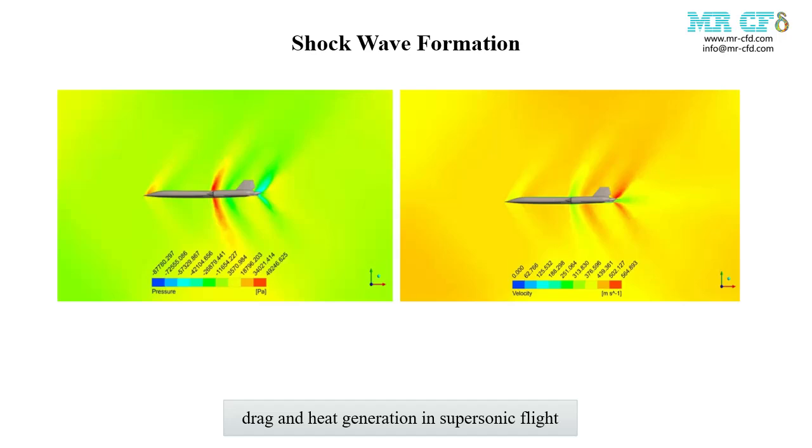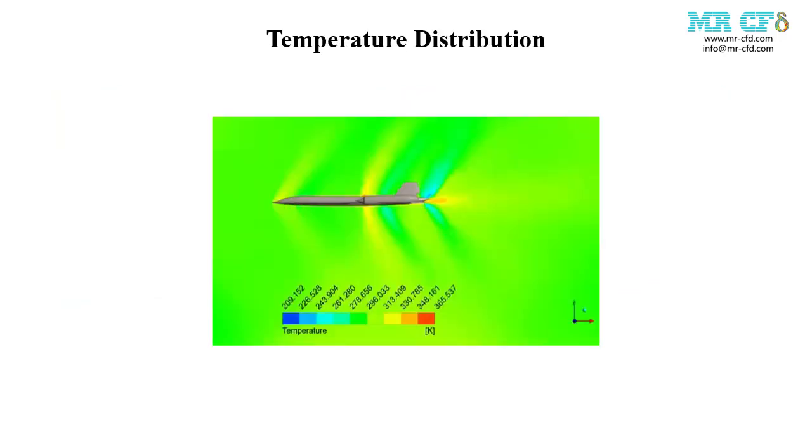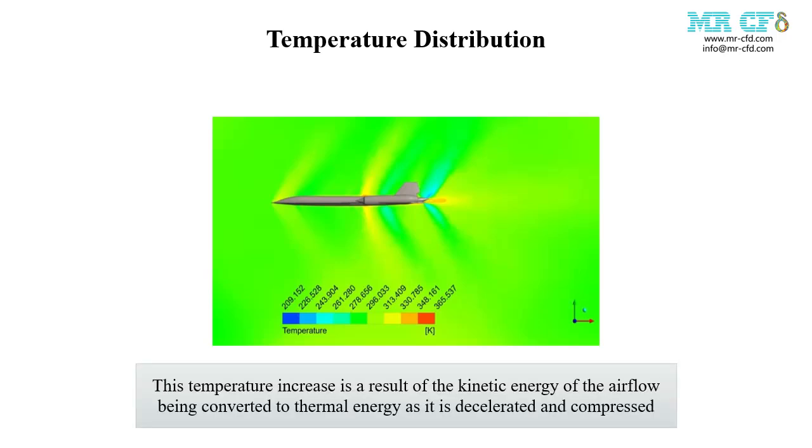The temperature contour plot demonstrates the heating effects associated with supersonic flight. Areas of elevated temperature are observed around the nose, leading edges, and engine inlets. This temperature increase is a result of the kinetic energy of the airflow being converted to thermal energy as it is decelerated and compressed.